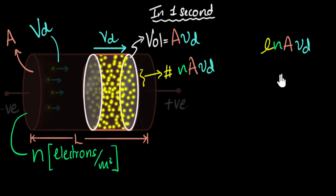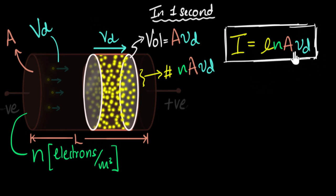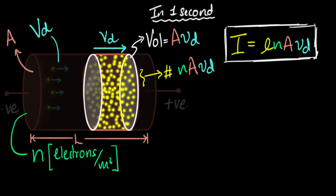This is the total charge that passed through the area in one second — that, by definition, is our current. So we have calculated what current is through this particular conductor. This is the total volume covered by electrons in one second, giving the total electrons passing through the area in one second, and thus the total charge per second — the current.